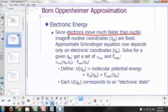So nuclear coordinates are fixed, Q sub n. And then we write an approximate Schrodinger equation now, taking those nuclear coordinates as fixed. So we just have a Schrodinger equation that depends on the coordinates of the electrons. We solve for the wave function for the electrons, and when we do that, we get a value for the electronic energy.